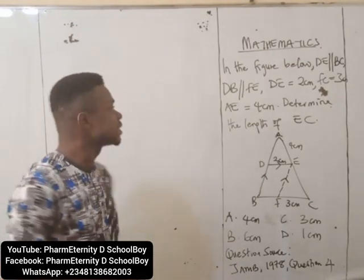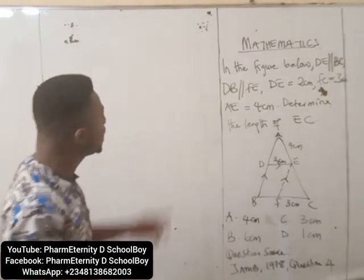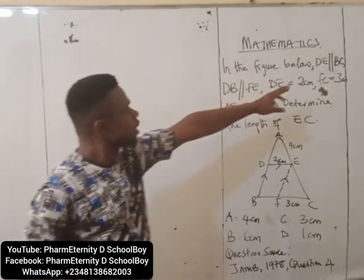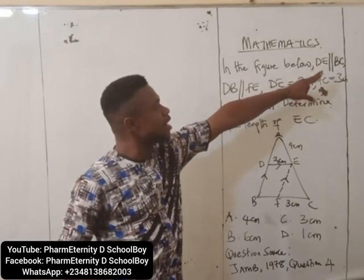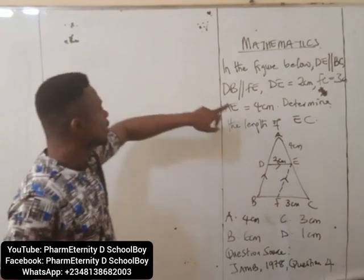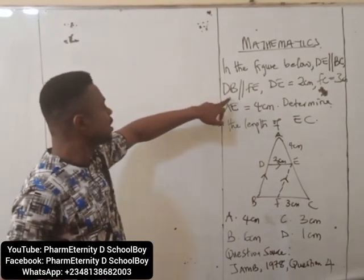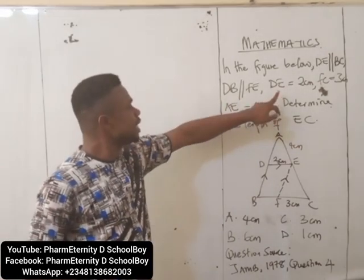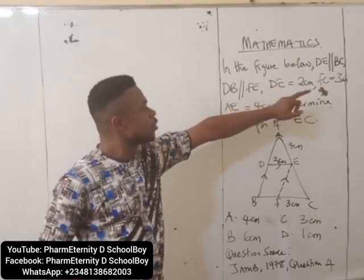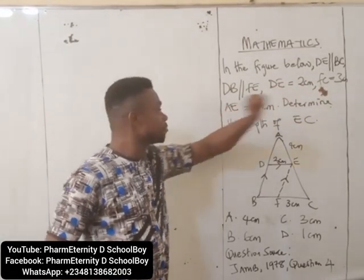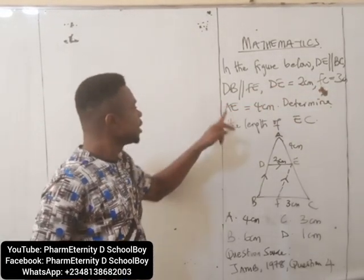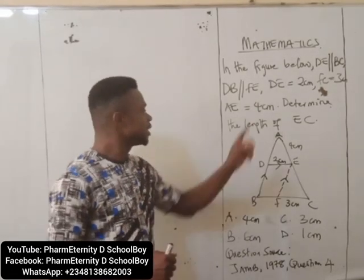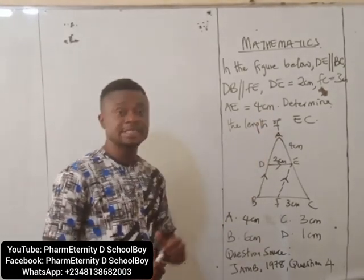The question says: in the figure below, DE is parallel to BC, DB is parallel to FE, DE is 2cm, FC is 3cm, AE is 4cm. Determine the length of EC.